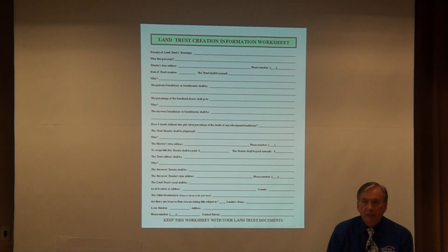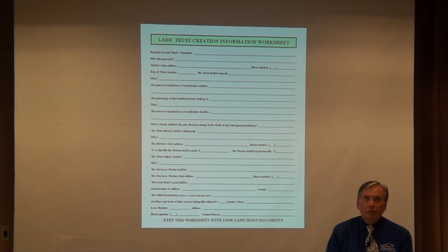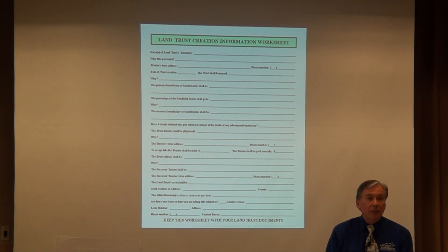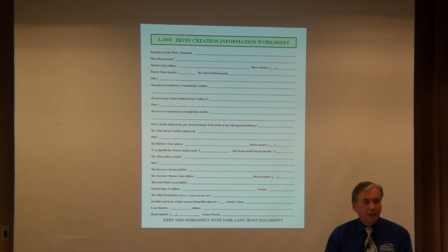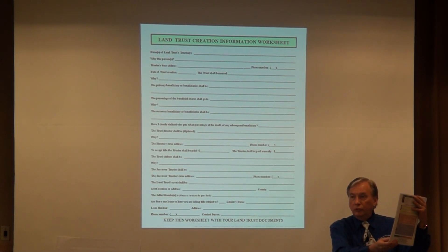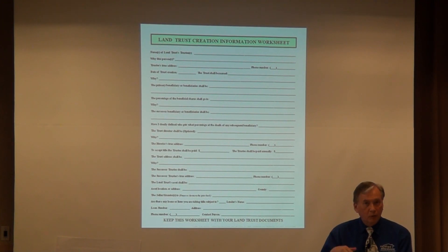Now we get to the successor trustee — the person who can stand in for the primary trustee. If the primary trustee can't be found — maybe they're in Europe for a month and you want to close tomorrow — no problem. We simply terminate the primary trustee and the successor trustee we already named in our documents steps in. There's a termination of trustee and a resignation of trustee form included, along with an extension of trust form.